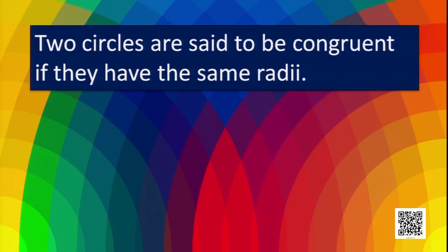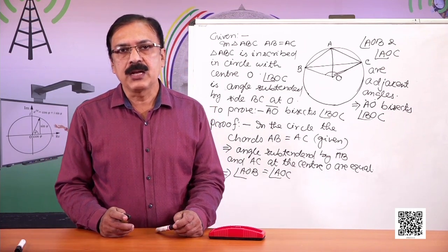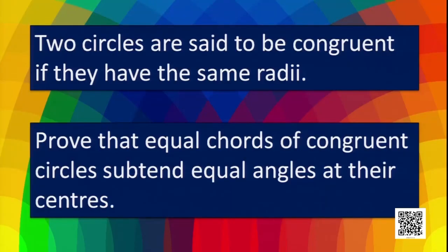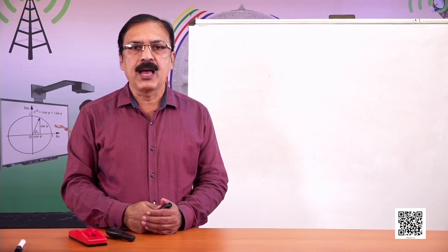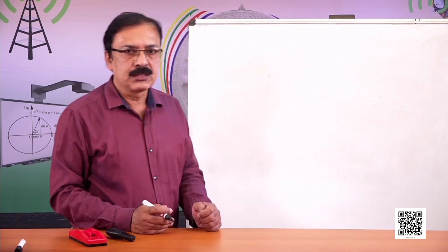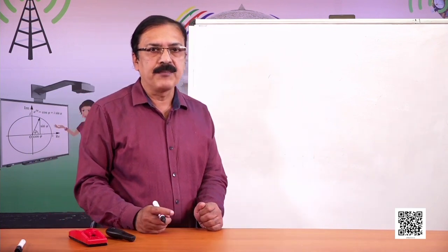Two circles are said to be congruent if they have the same radius. We discuss this because our next question is related to it. We can draw two congruent circles — that is, two circles having the same radius.